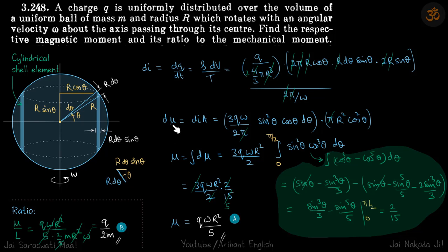So now we find d mu, the magnetic moment because of the cylindrical shell, which is di times a. So we put the value of di here from here. So this is the value of di which we will get from simplifying this. So area, cross section area is pi r cos theta whole square. So this can be written as 3 q omega r square by 2 sin square theta cos cube theta.